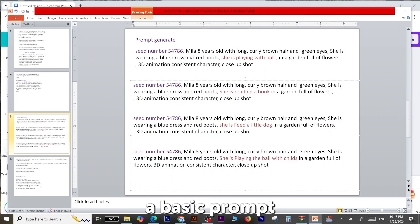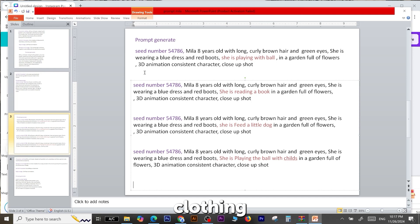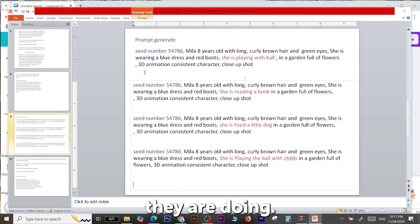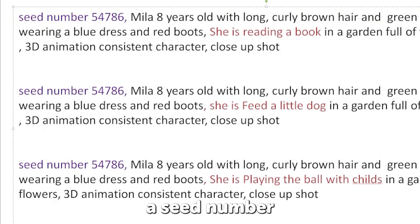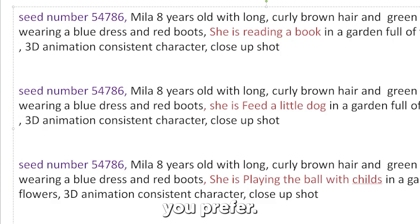To create a basic prompt describing your character, include details such as age, hair color and type, clothing, and the scene in which the character is situated, along with what they are doing. For consistency, be sure to include a seed number in your prompt. I've randomly generated one, but you're welcome to use any number you prefer.